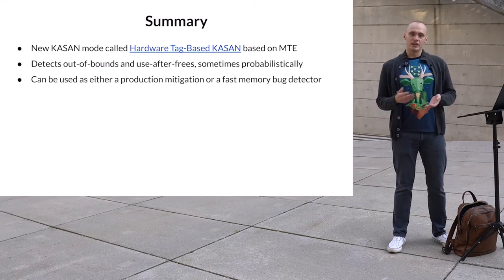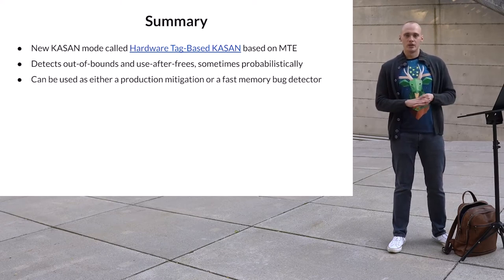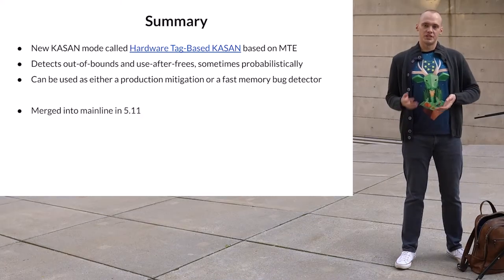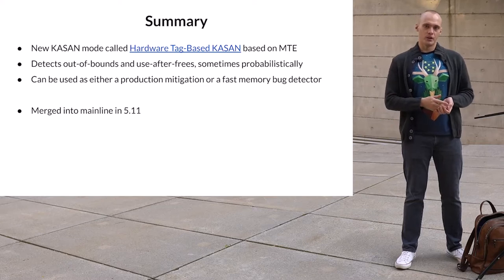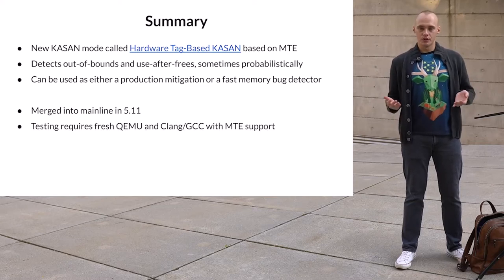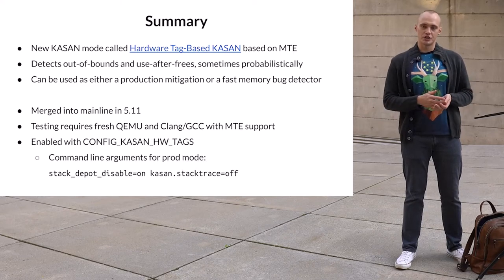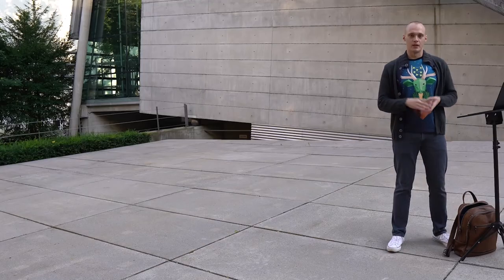MTE-based KASAN is intended to be used as a security mitigation in production; however, it can also be used as a debugging tool. The new KASAN mode is available in the mainline kernel since version 5.11. You can try it yourself — you will need a recent QEMU and either Clang or GCC with MTE support. Then just build the kernel with the KASAN_HW_TAGS config enabled and boot it.